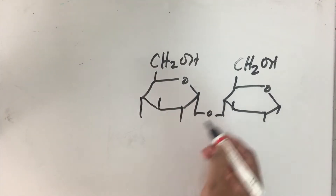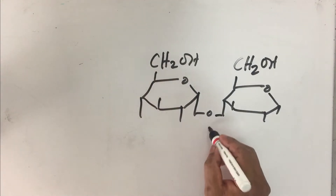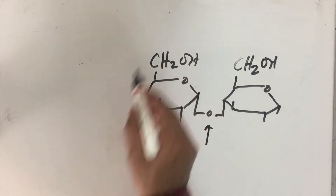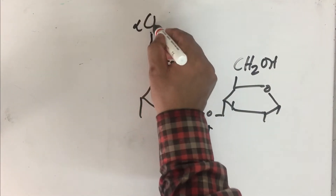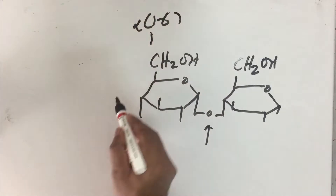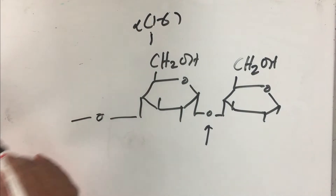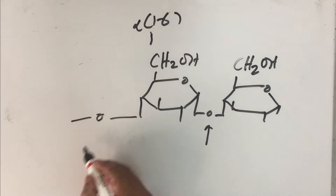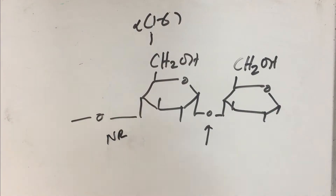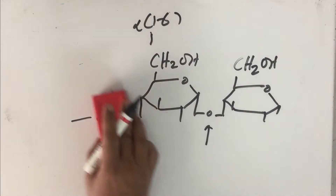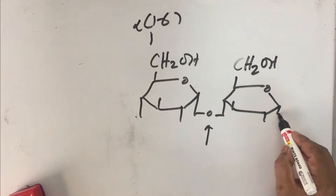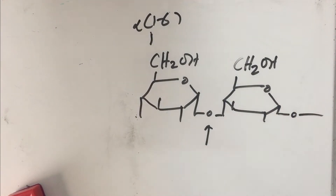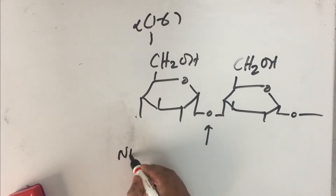Residue number one and residue number two, linked by a 1,4 alpha glycosidic bond, and it can have an alpha 1,6 glycosidic bond here, where more glucose residues will be added. This is the non-reducing end. Assume this is the last residue — it goes on like this. This is the last residue; it is the non-reducing end.